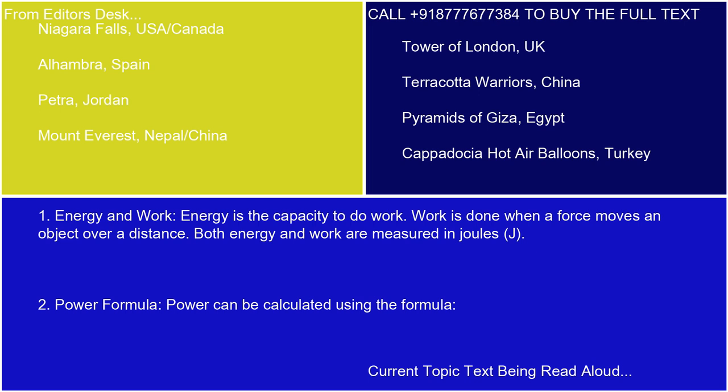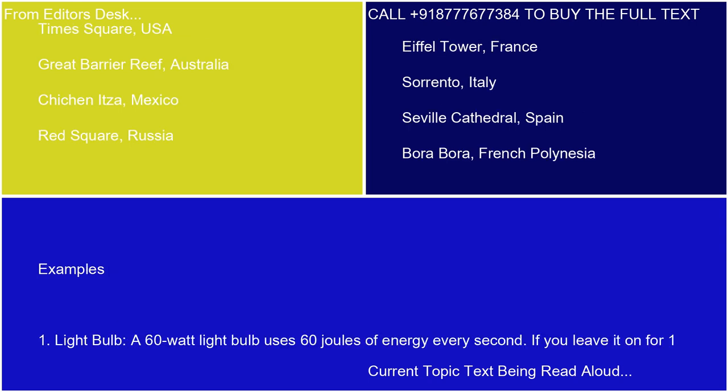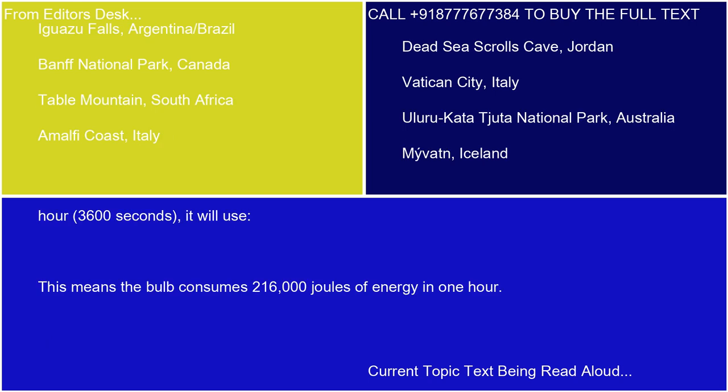Power formula: power can be calculated using the formula where P is power in watts (W), W is work or energy in joules (J), and T is time in seconds (S). For example, a 60-watt light bulb uses 60 joules of energy every second. If you leave it on for one hour, 3,600 seconds, this means the bulb consumes 216,000 joules of energy in one hour.